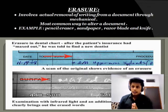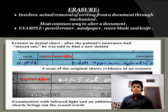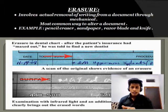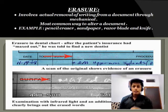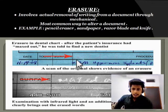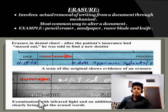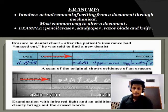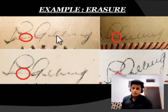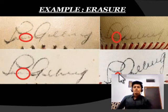Erasure involves the actual removal of writing from a document through mechanical means — this is the most common way to alter a document. Mechanically or chemically we can erase content. Pencil eraser, sandpaper, razor blade, and knife are used. With the help of infrared light, we can determine what was erased. In a second example, erasure was done — maybe with sandpaper or pencil eraser — which we can see easily in infrared light.